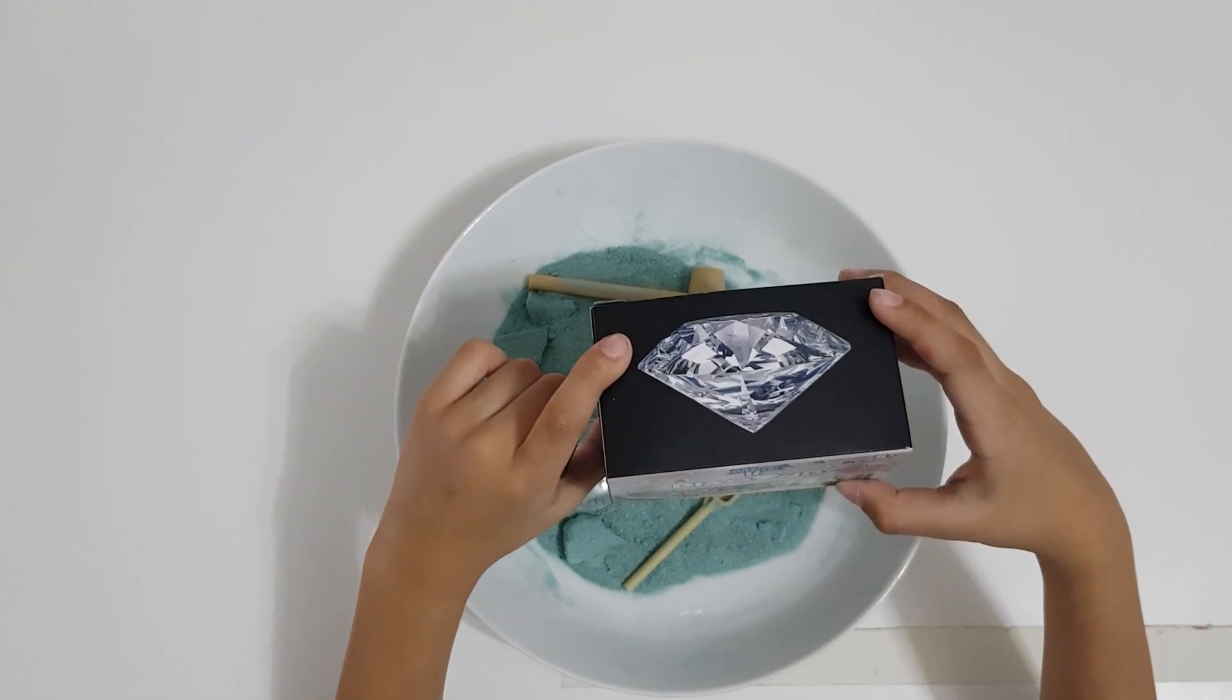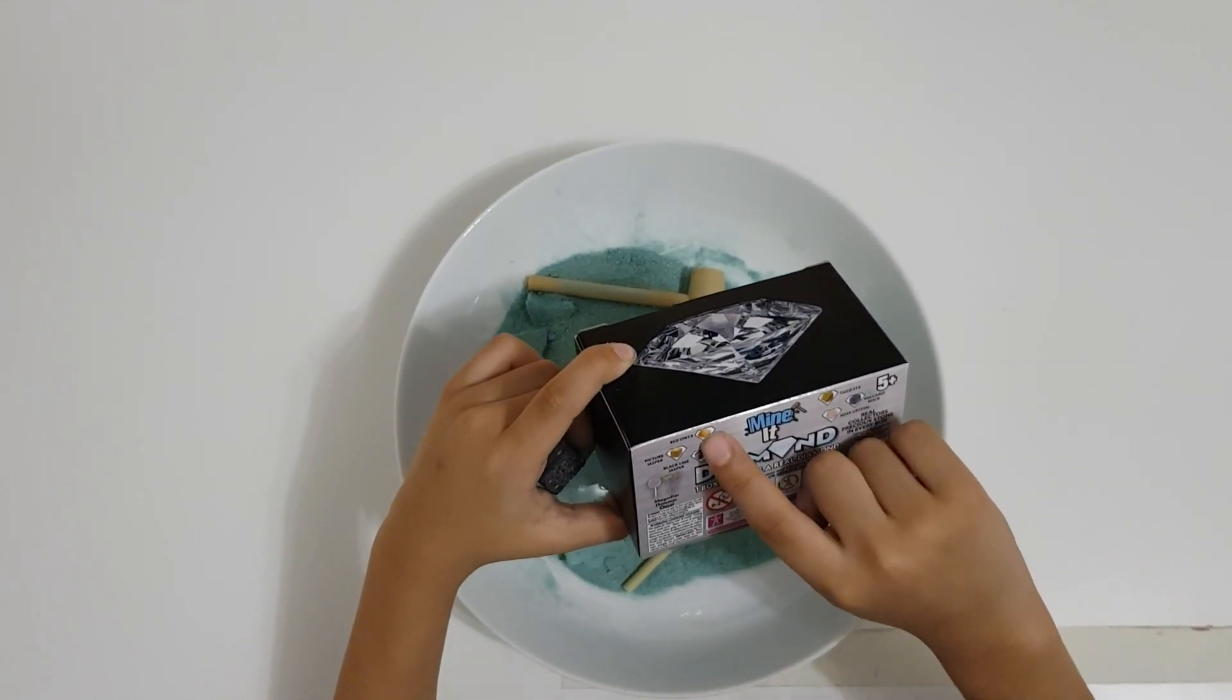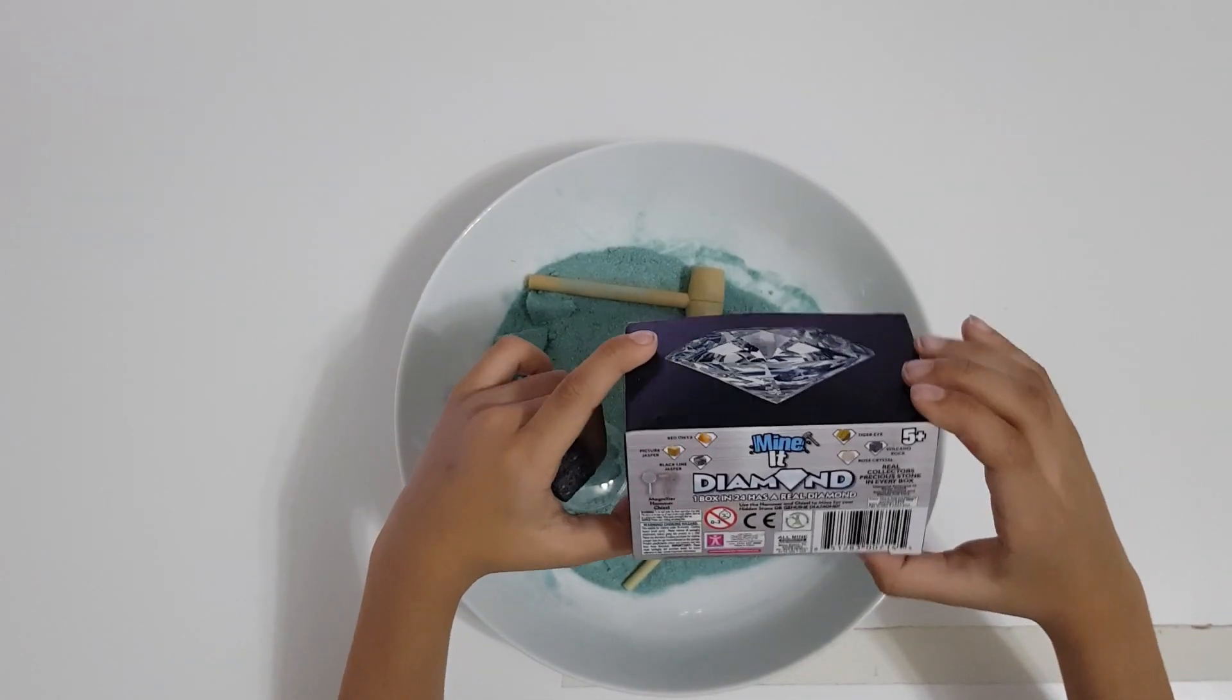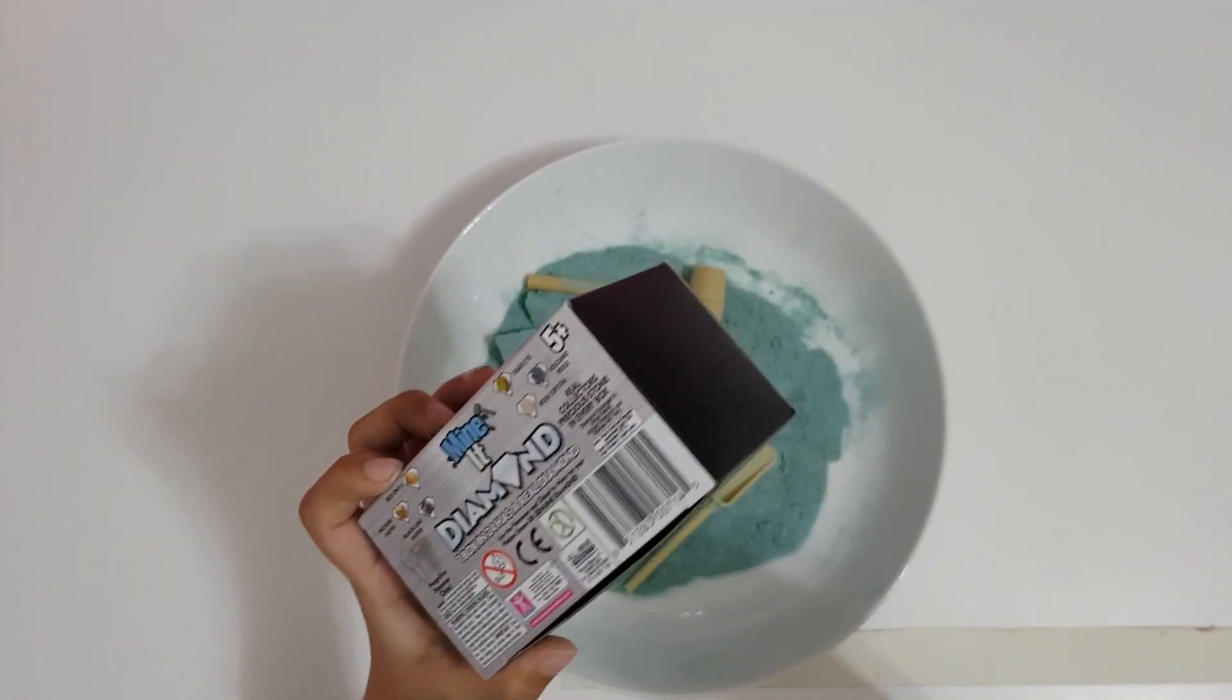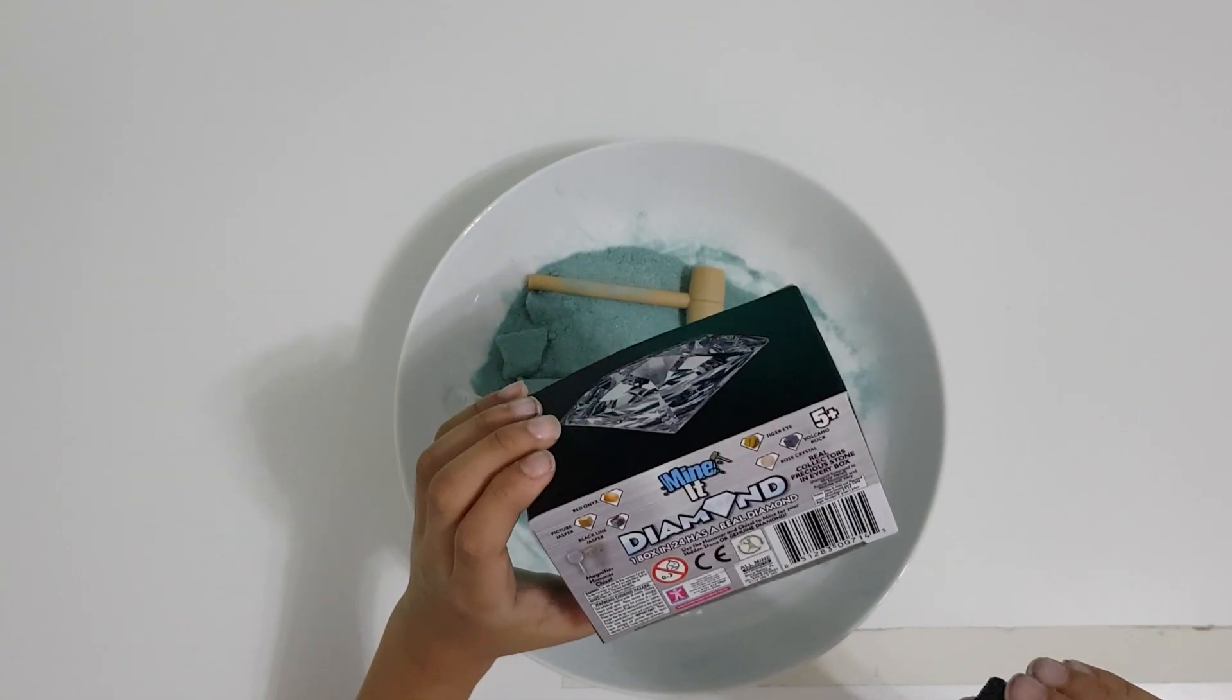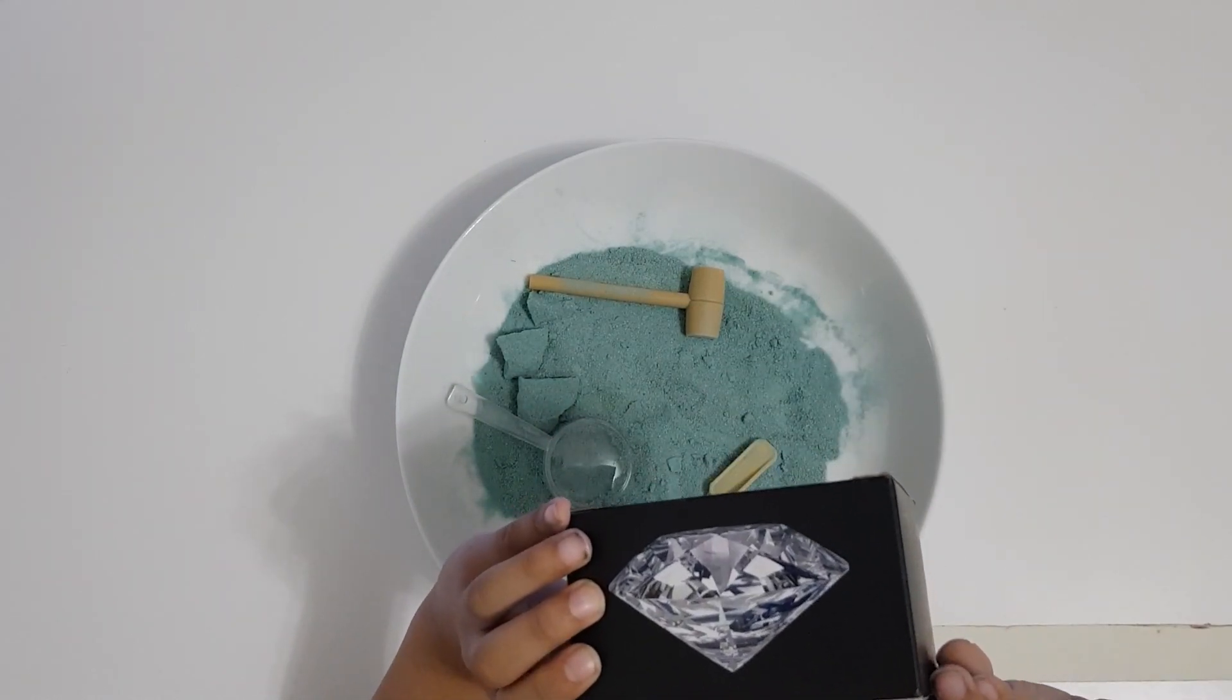And another one is picture jasper. There's a red onyx. This one is a black lime jasper. I've got this from Smith Toy Superstore. Also my sister's got a mine it gold instead of diamond, and she had got the rose crystal. She's gone to get it.